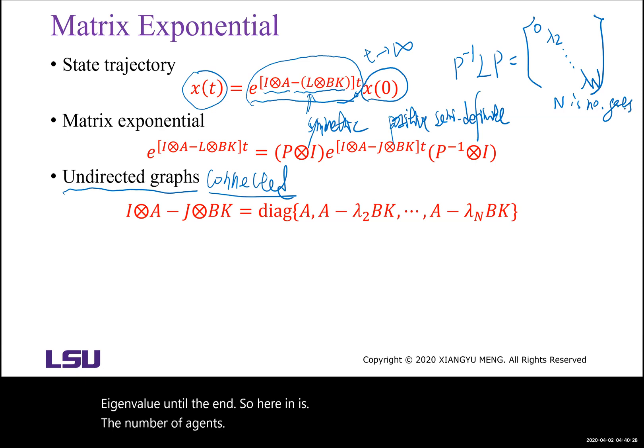So each xi here belongs to small n. So the x belongs to big N times small n. Let's denote this one by J. Then we know the L matrix, the Laplace matrix L can be written as P, J, and P inverse.